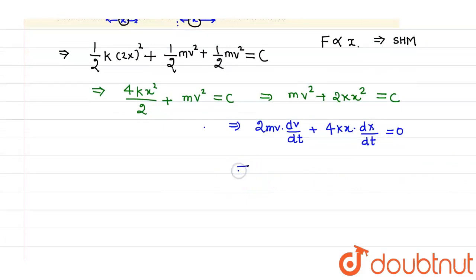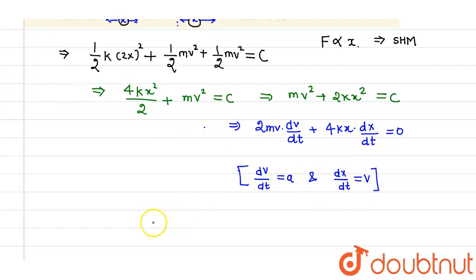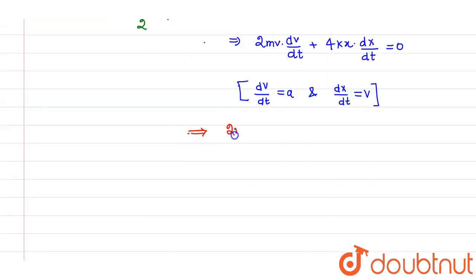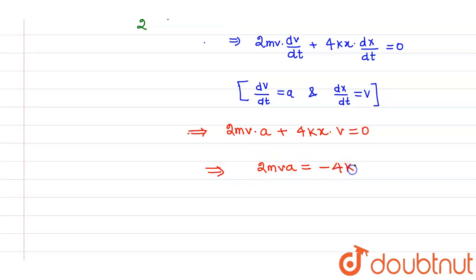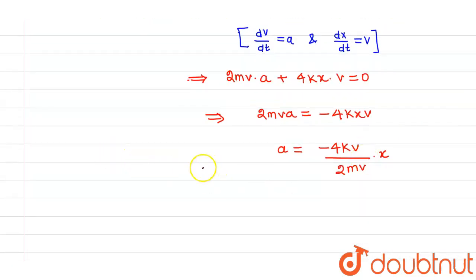Since dv/dt is acceleration a, and dx/dt is velocity v, substituting into the differentiated expression gives 2mv·a + 4kx·v = 0. Solving further: 2mv·a = −4kxv, which gives acceleration a = −4kv / (2mv) times x.